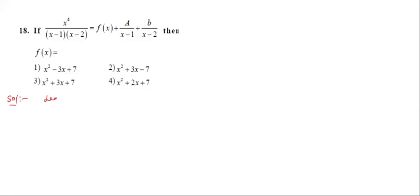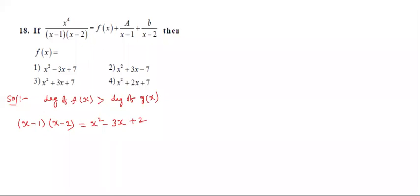Overall observe that: degree of f(x) is 4, degree of g(x) is 2. Since 4 is greater than 2, this is an improper fraction. In this case we want to do long division. The denominator given is (x-1)(x-2). Multiplying directly: x² - 3x + 2. So we divide x⁴ by x² - 3x + 2.